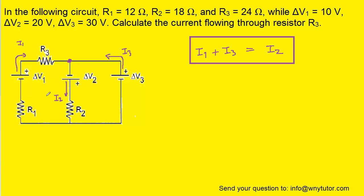Our next step is to apply Kirchhoff's loop rule. We select an arbitrary starting point in the circuit and move around the loop, keeping track of potential changes, until we return to where we started. Moving from the negative to the positive terminal of the first battery represents an increase in potential equal to delta V1, which is 10 volts. So we write positive 10 volts so far.